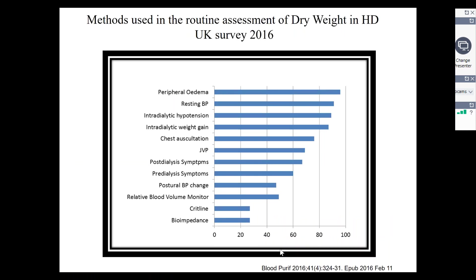We have done a survey to look at how clinicians and frontline nurses assess dry weight in hemodialysis. This is a UK study where we asked clinicians and nurses what they use. Top of the list is peripheral edema or presence or absence of it, blood pressure, interdialytic changes, interdialytic weight gain, auscultation of the chest, and jugular venous pressure — typical clinical signs that we tend to use.